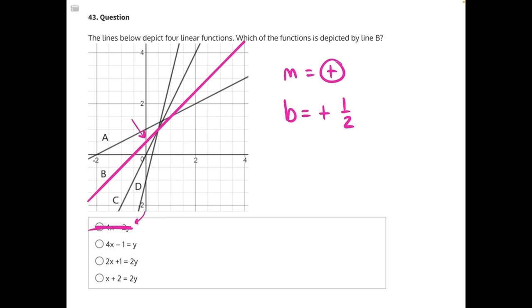For B, this is already written in slope-intercept form. We just need to flip the y over to the other side. We can see that we don't have the correct y-intercept. We're looking for positive one-half, not negative 1. So B is also incorrect.